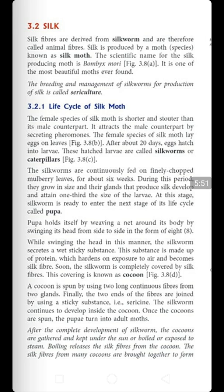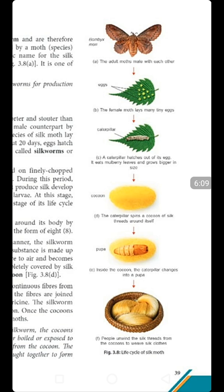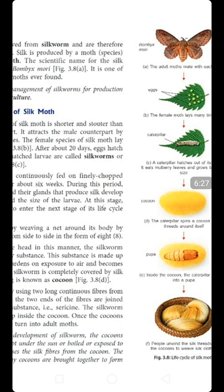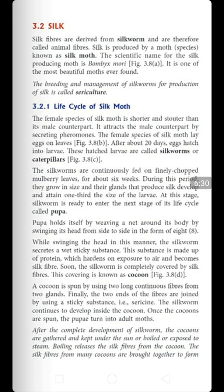The silk thread is made up of proteins, which harden on exposure to air and become silk fiber. When that liquid material is exposed to normal atmosphere, it becomes thick and the final silk fiber forms. Soon the silkworm is completely covered with silk fiber, and this covering is known as a cocoon. The cocoon is spun using two long continuous fibers from two glands. The two ends of the fibers are joined using a sticky substance called sericin.